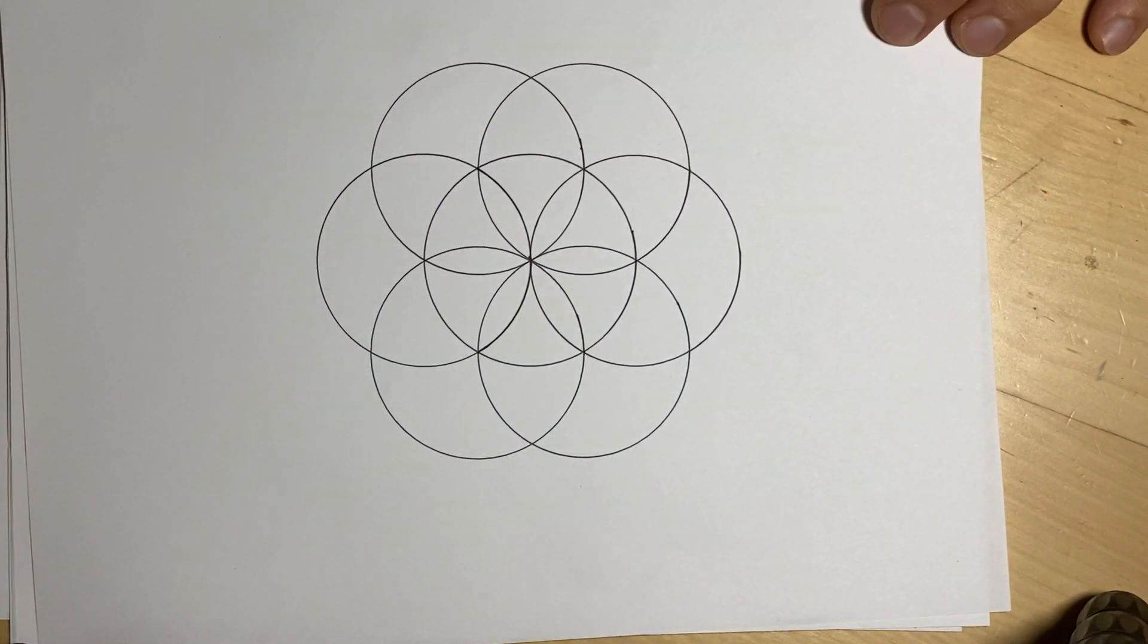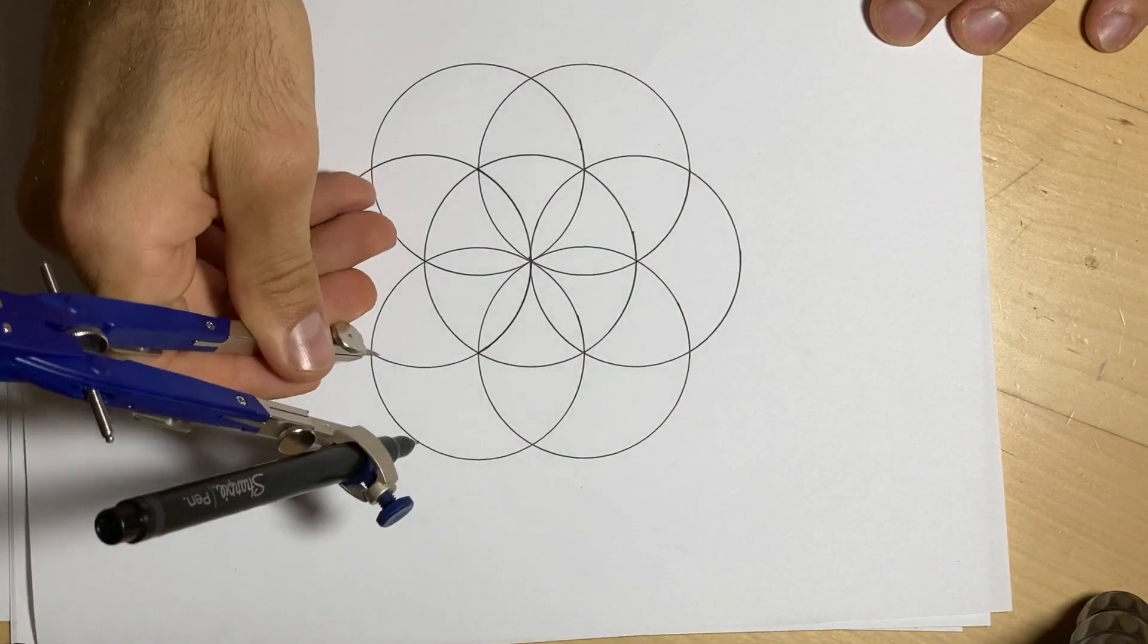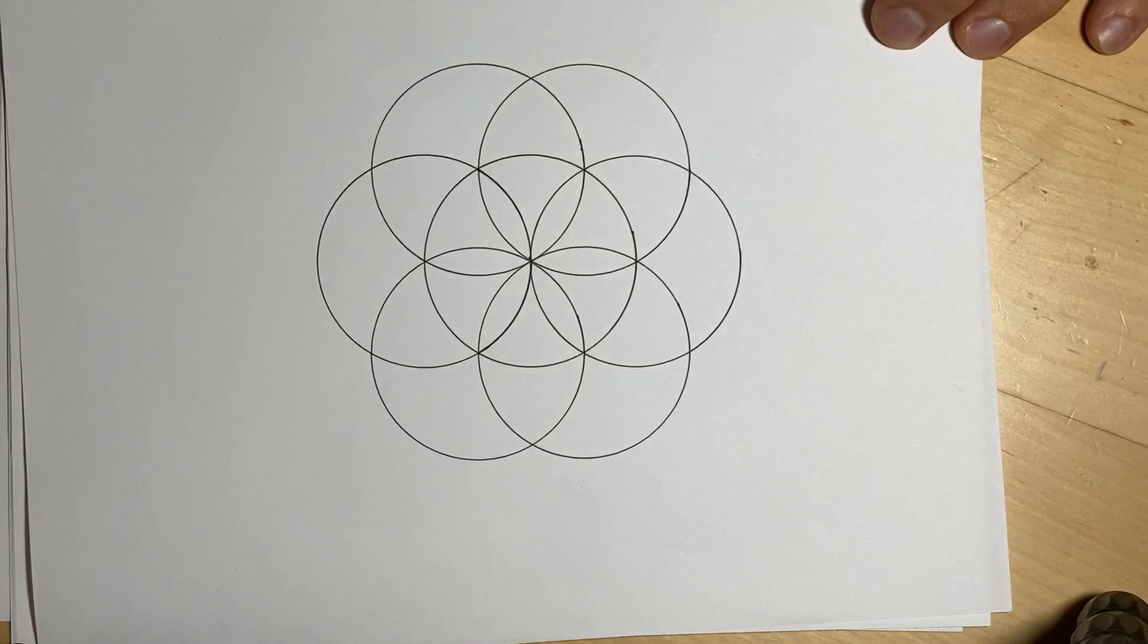And that is what we call the seed of life. If we were to continue around it one more layer where the two meet, we would draw what we call the flower of life. We'll do that in another video.